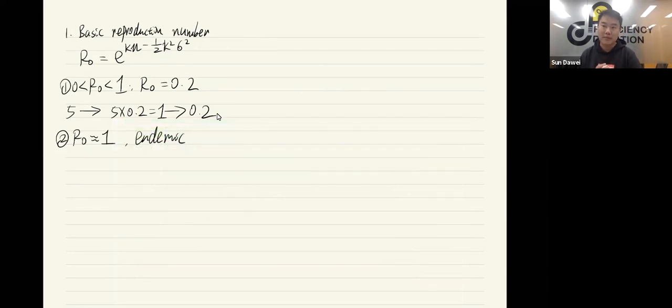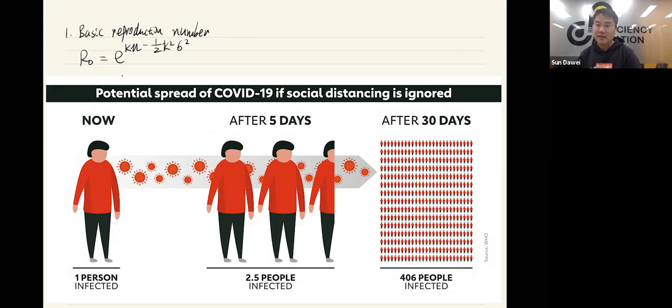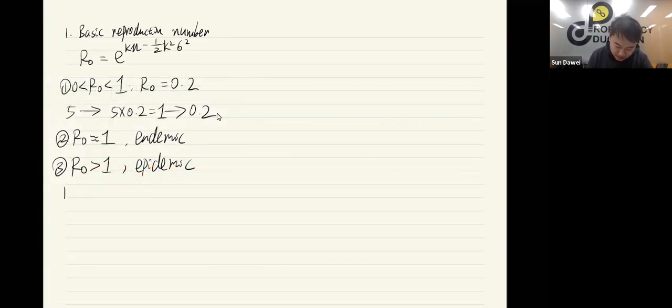The last case is where the problem is, where R0 becomes bigger than 1. That's what we call an epidemic. What this means is there are more new cases generated than previous. This type of R0 will produce exponential growth initially, which is pretty scary. Let's say R0 is equal to 4 for now. We're going to use the same number of cases. So 5 people will pass down to 20 people and 20 people will pass down to 80 people.